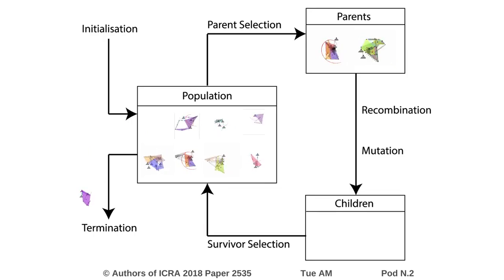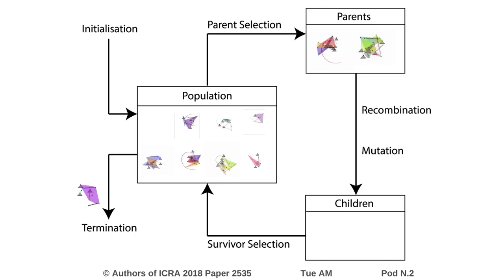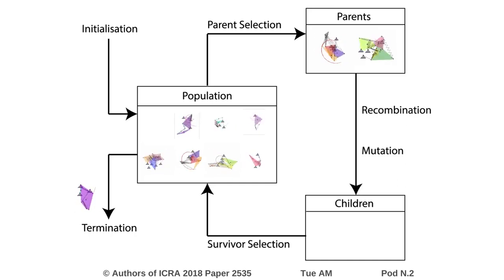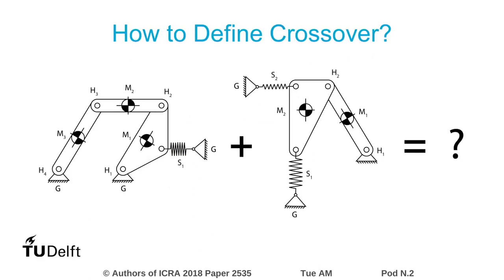However, one very important question remains: how to recombine two different mechanisms into a new mechanism. This problem is easily understood given this image, where spring mechanisms with a different number of components are shown. It isn't immediately clear how to combine them, and the solution lies in the data structure that's used — the genome.